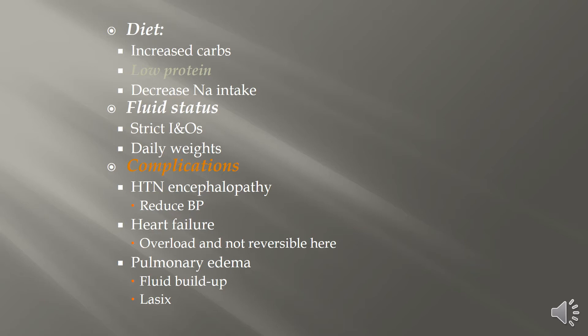Complications from acute glomerular nephritis may include hypertensive encephalopathy. Symptoms include headache, restlessness, nausea, disturbances of consciousness, seizures, retinal hemorrhaging, and papilledema. We want to decrease blood pressure because it will continue to worsen these symptoms, so we must aggressively treat the hypertension.